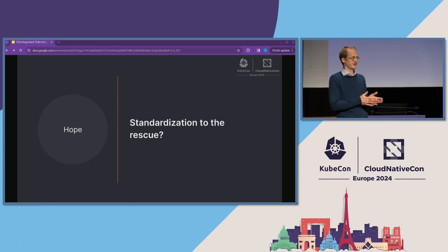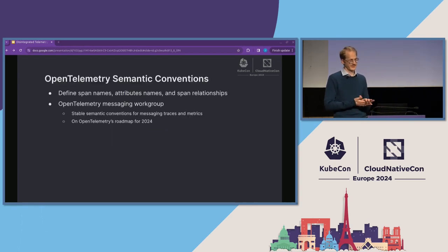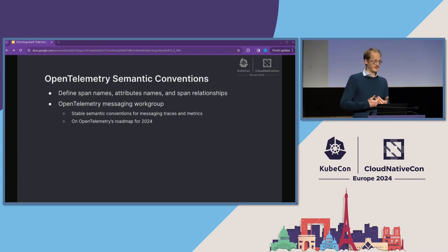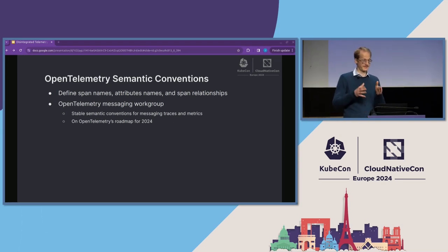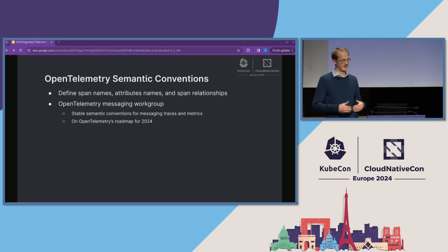Lots of pain. Is there any hope out there? Let's try to call standardization to the rescue. And where does this standardization happen? It happens in OpenTelemetry semantic conventions. Those semantic conventions basically define span names, attribute names, and very importantly for what we look at here, span relationships. And they define the meaning of those names, attributes, and relationships. Semantic conventions don't just cover traces — they cover all observability signals. But for our purposes here, we will focus on traces.